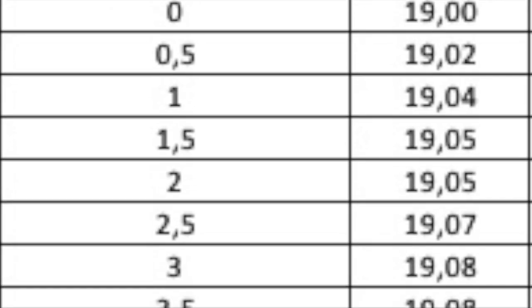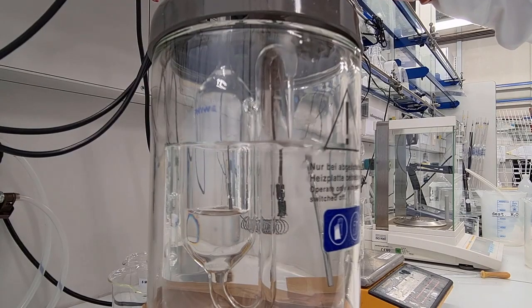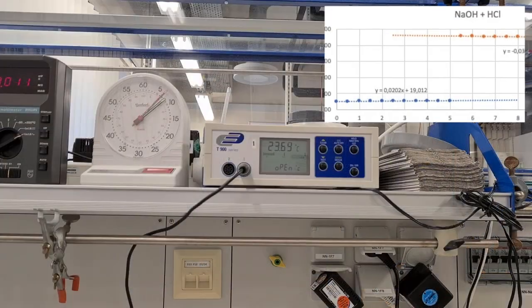Record a 5-minute pre-period, carefully blow the hydrochloric acid into the solution, and record another 5-minute post-period.